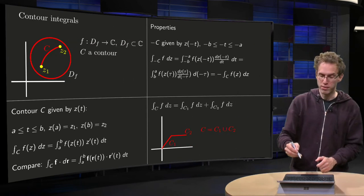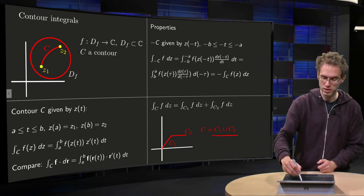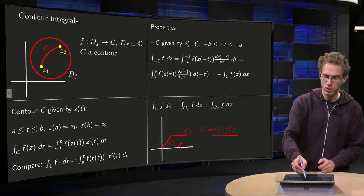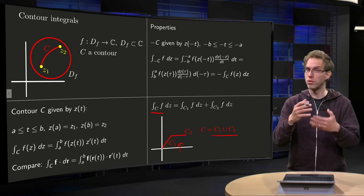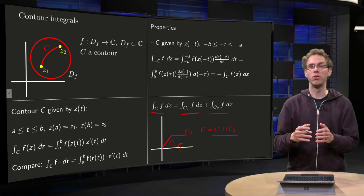And another property, if your C consists of C1 joined C2, something like this for example, then your integral along C, you can prove this in the same way, is the integral along C1 plus the integral along C2 of f.